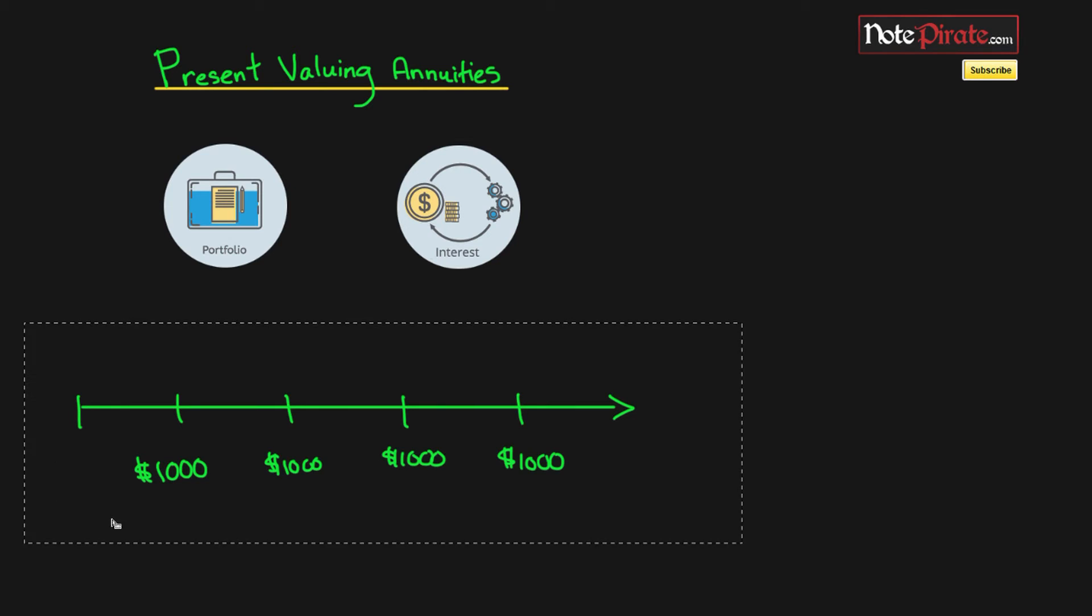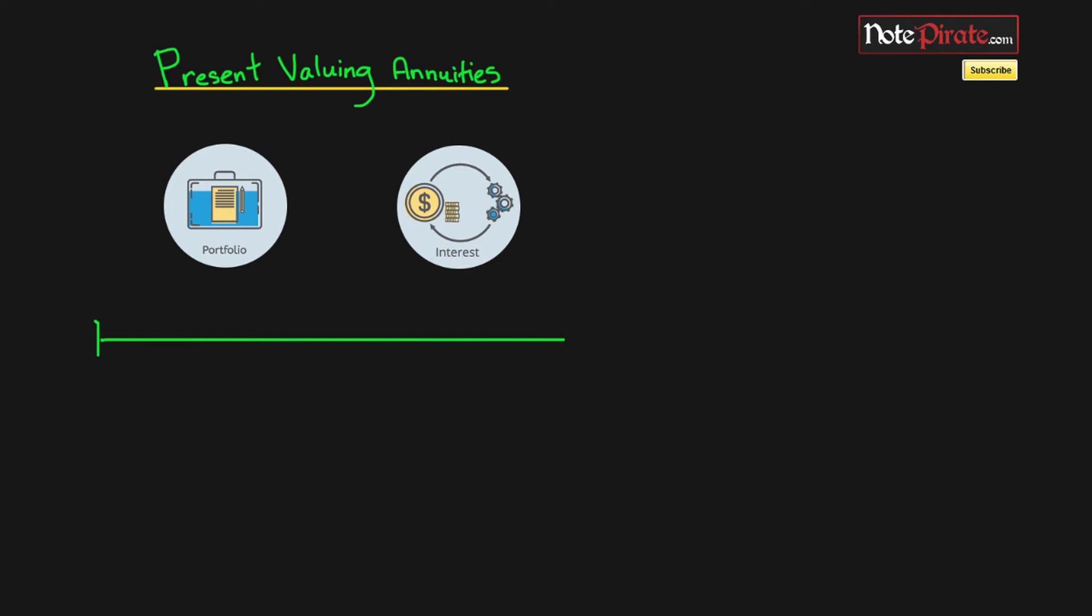So let's go ahead and actually look at an example of annuity. For instance, I'm actually going to get rid of these two images really quickly so that it doesn't take away from the timeline that I'm trying to draw right now.